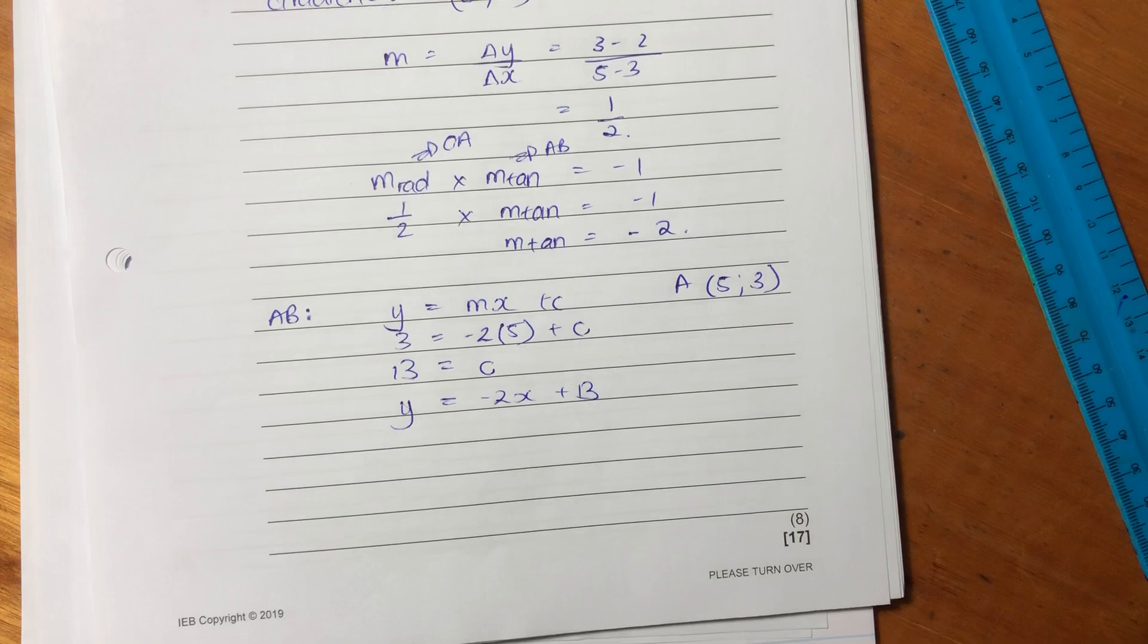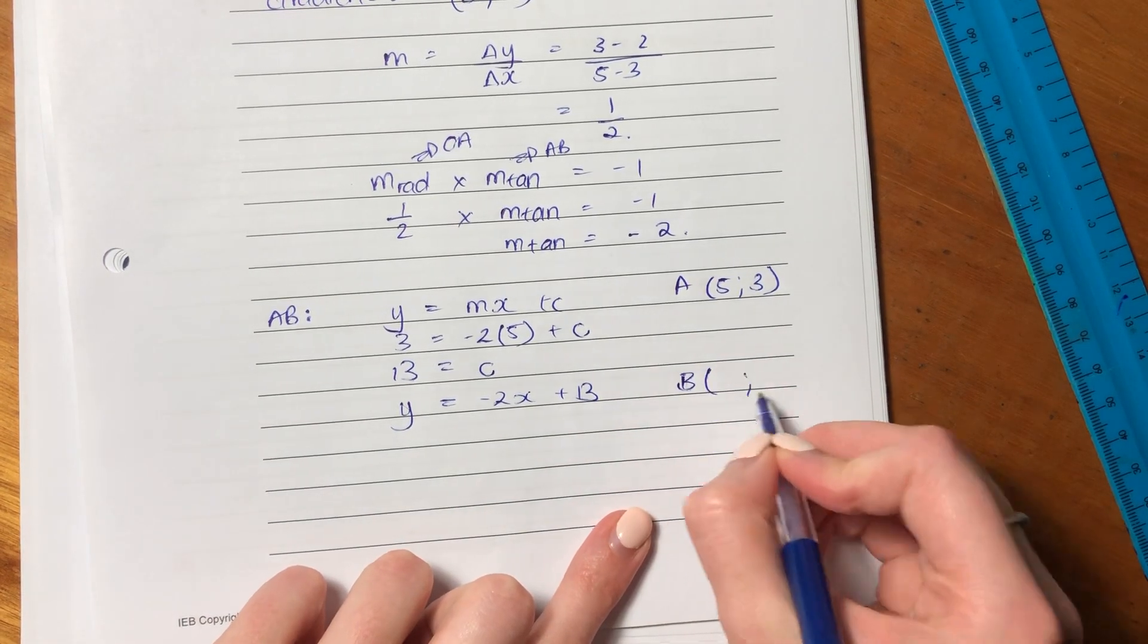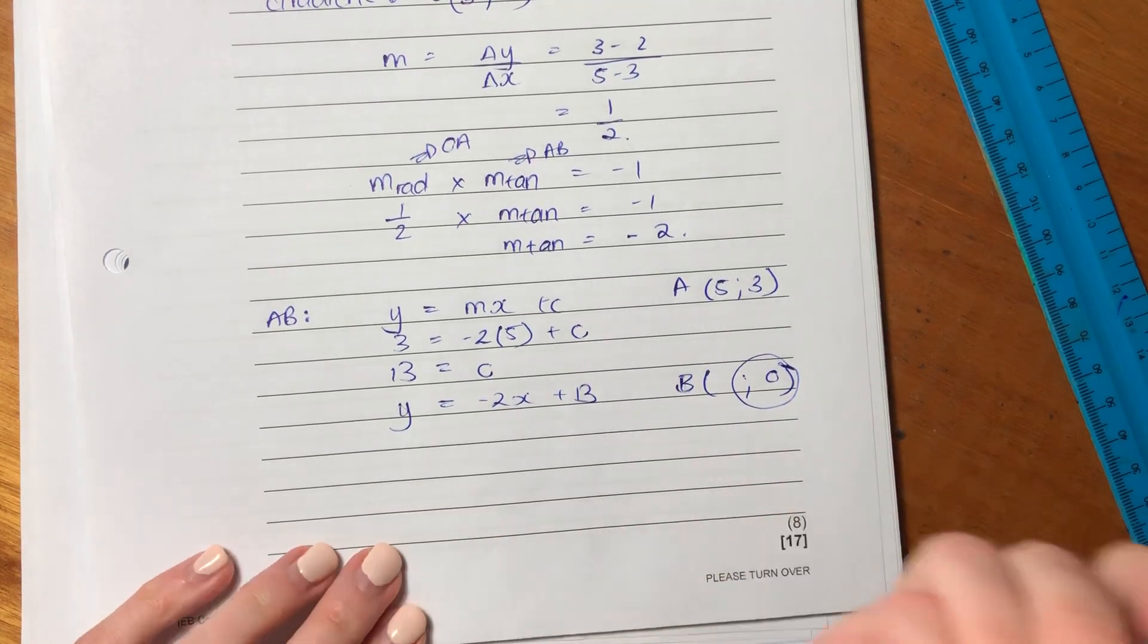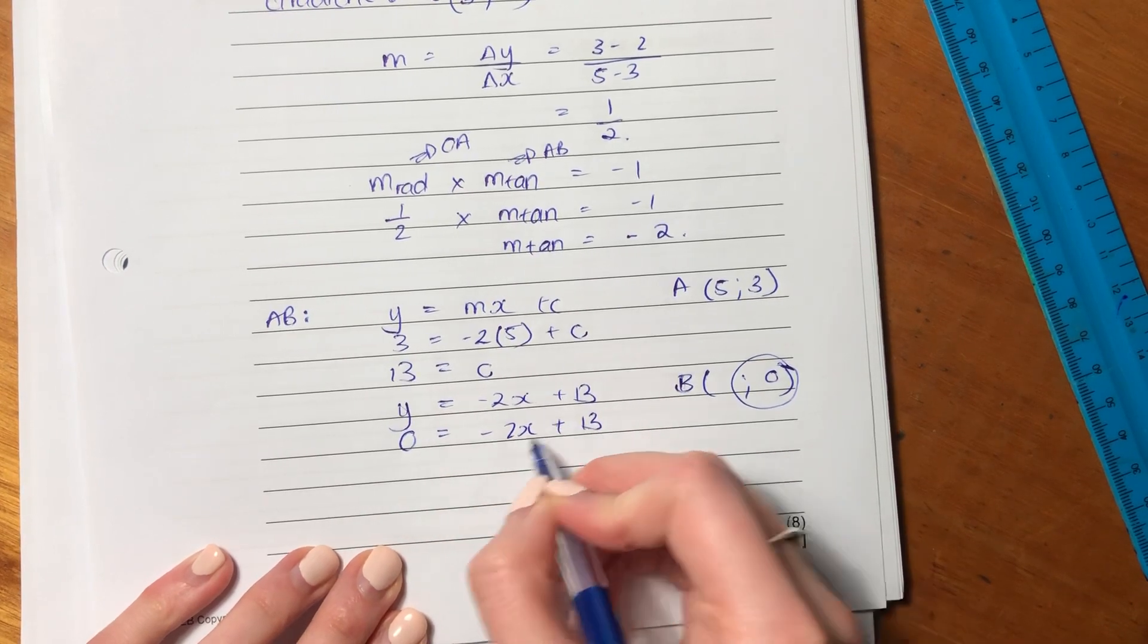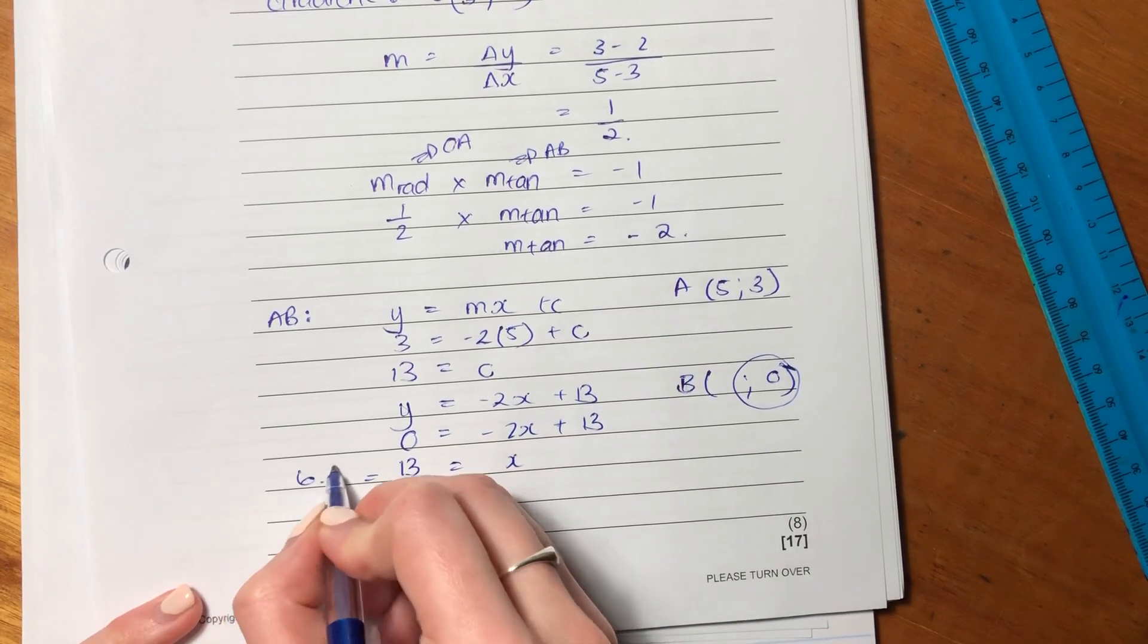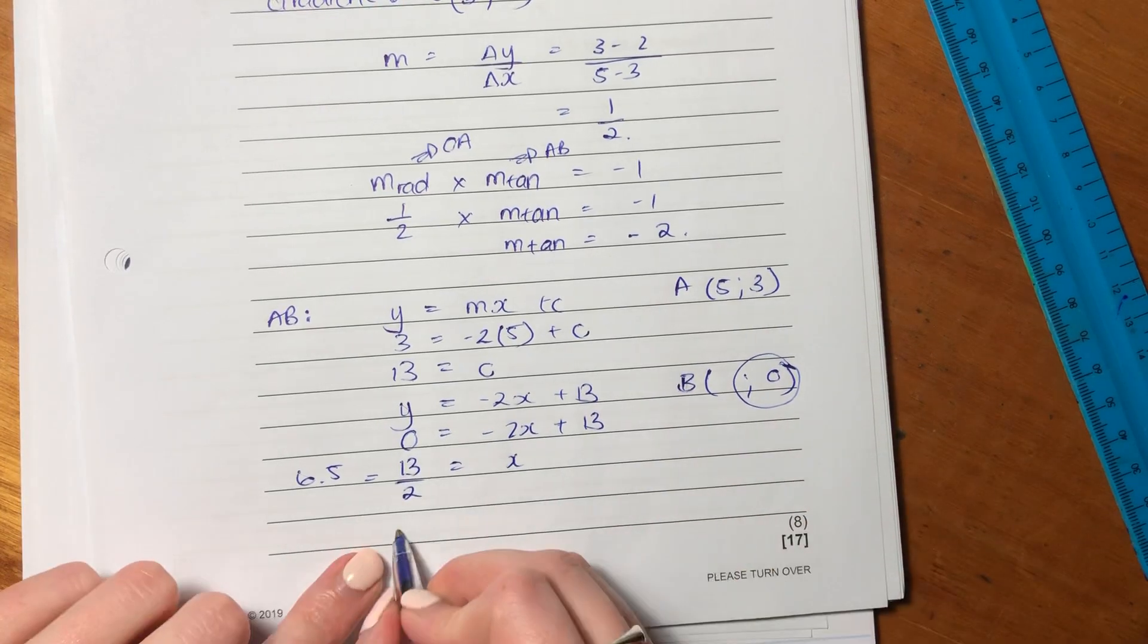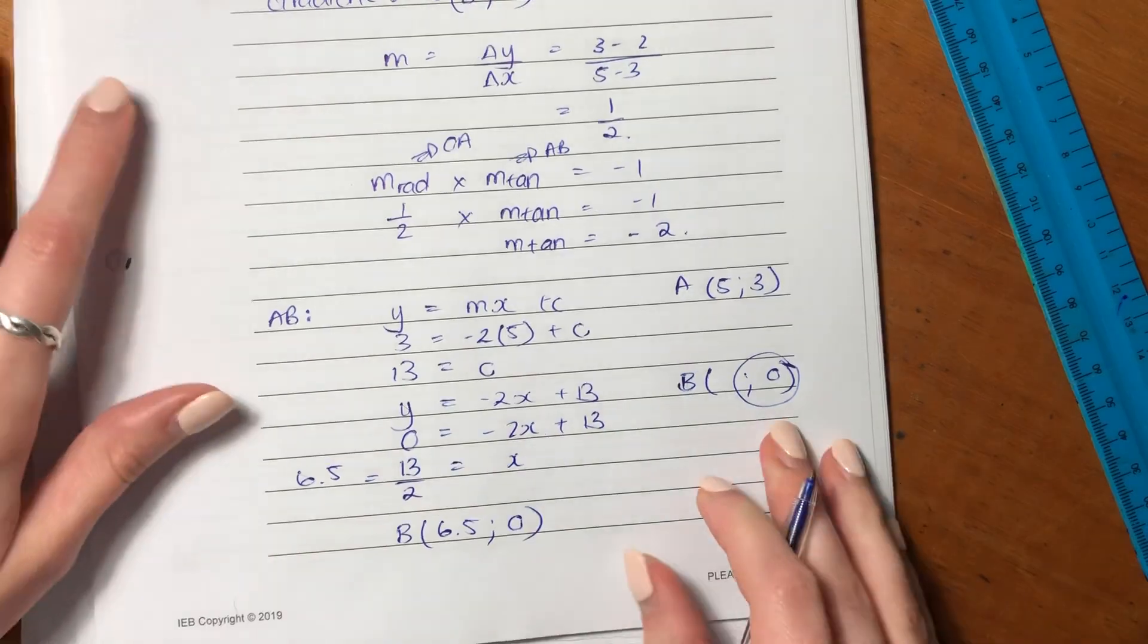But now we want to find the x value of B, because we know that the y value is 0. So let's sub that in. So I'm getting that x is 13 over 2, which is actually 6.5. So B is 6.5 and 0.